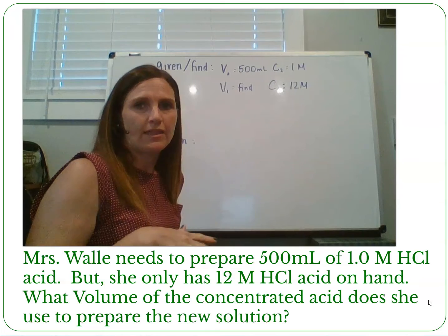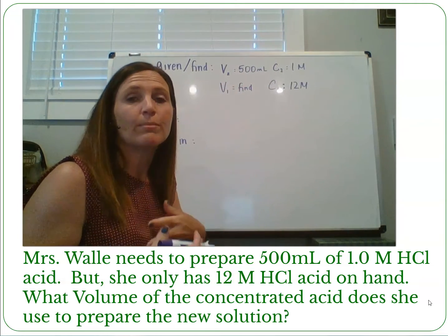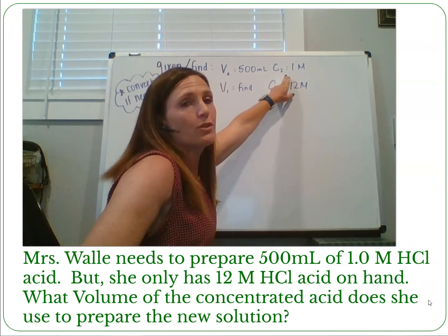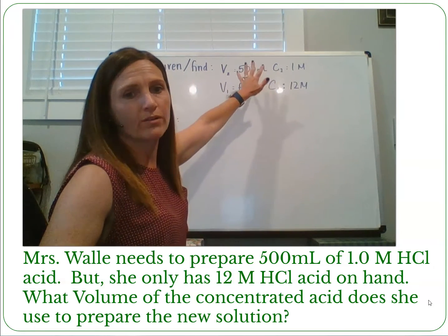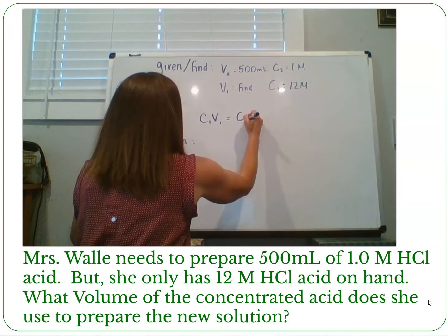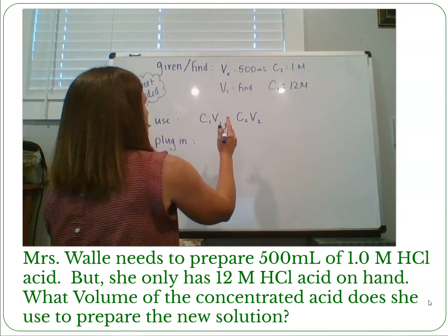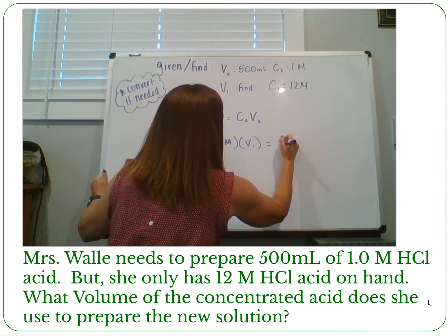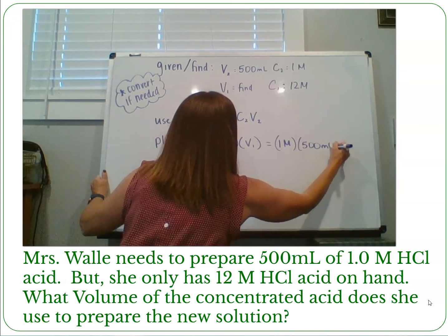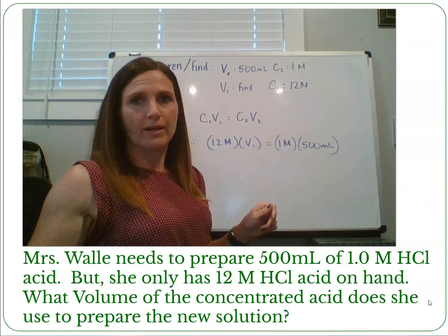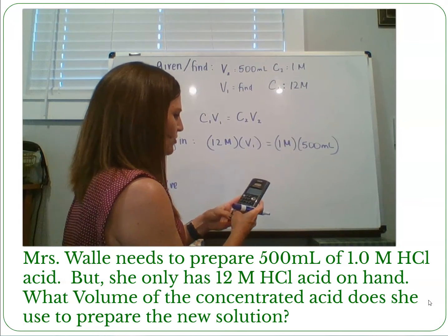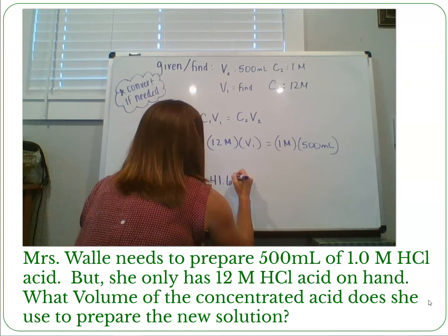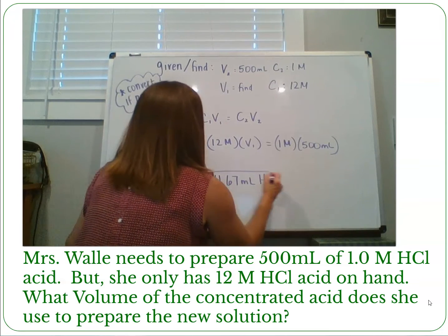It might be confusing that I put the twos first and then the ones, but that's because the problem starts with the final concentration and volume. In reality it doesn't matter which you call it — as long as the 500 milliliters goes with the 1 molar, it can be V1/C1 or V2/C2. Using C1V1 = C2V2, concentration one is 12 molar times volume one (what we're finding) equals concentration two, 1 molar, times 500 milliliters. That gives us 1 × 500 ÷ 12 = 41.67 milliliters of HCl.